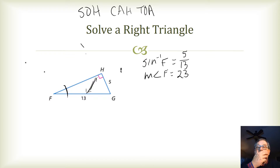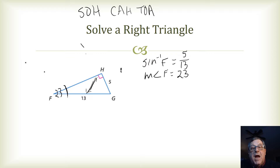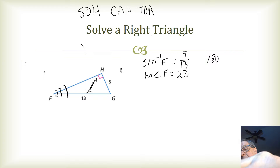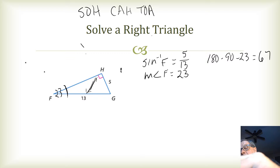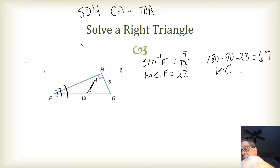Now that I have angle F as 23° and I know angle H is 90°, I can find angle G using the triangle angle sum theorem: 180 minus 90 minus 23 equals 67. So the measure of angle G is 67°.